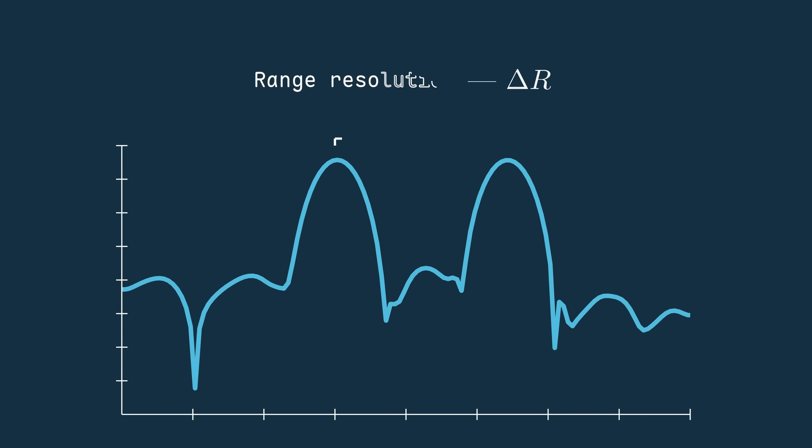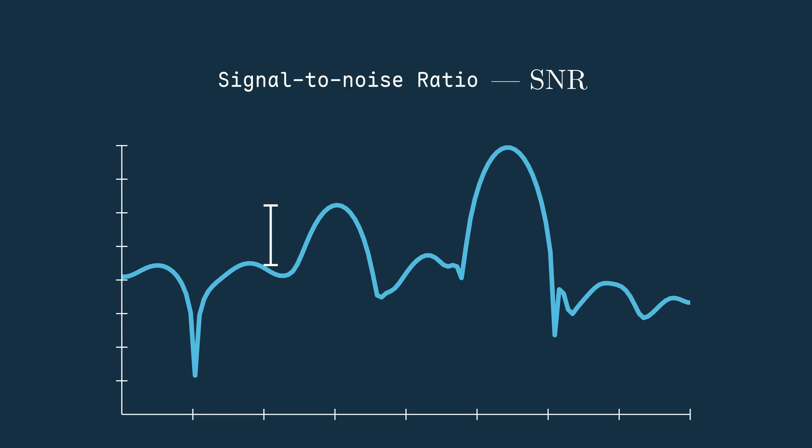A radar's range resolution is the smallest distance between two targets before they blur into one. Its signal-to-noise ratio tells you how clearly the signal rises above the background noise.